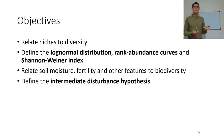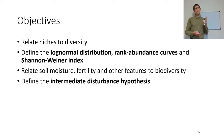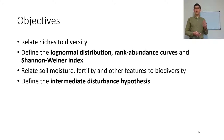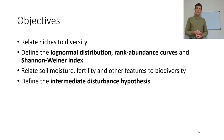Today's objectives are to relate niches to biodiversity. We'll define the log normal distribution, what are rank abundance curves, and be able to calculate the Shannon-Wiener Biodiversity Index. We'll also be able to relate soil moisture, soil fertility, and other features of the abiotic environment to biodiversity, and define the intermediate disturbance hypothesis.